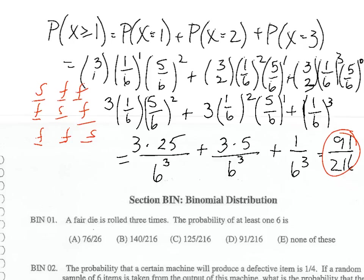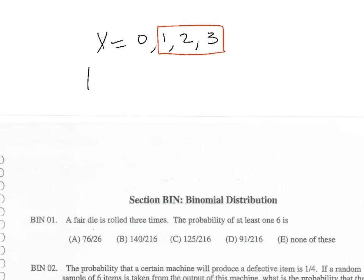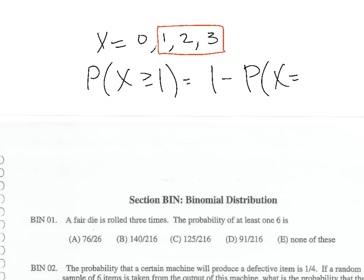So the answer is D: 91/216. The final point: another way to answer this is using the complement — P(X ≥ 1) = 1 − P(X = 0). Calculate P(X=0) and subtract from one. Try that approach and see that you get the same answer, D.